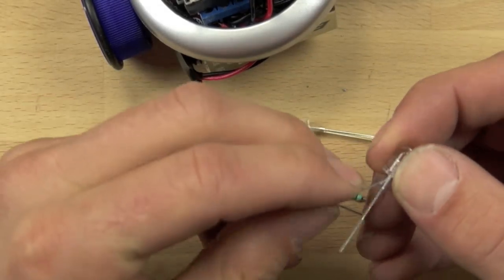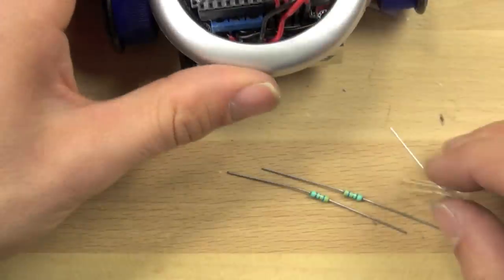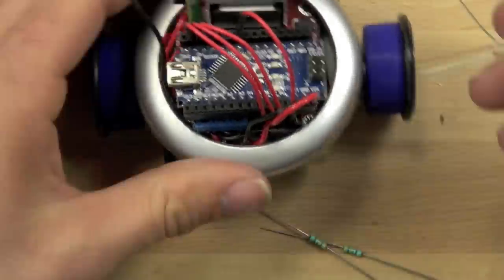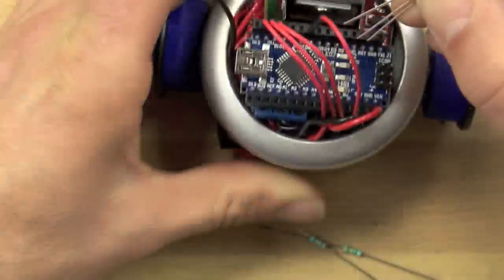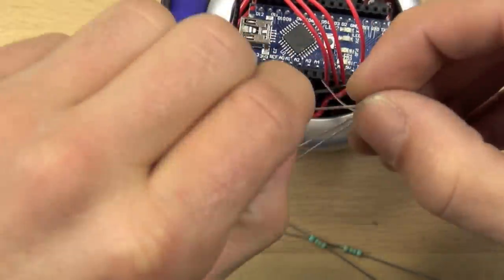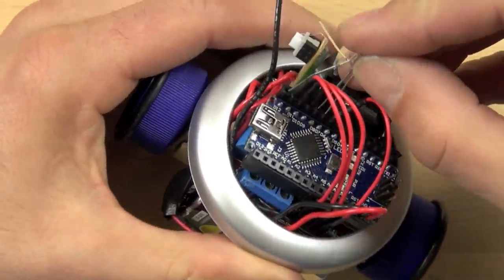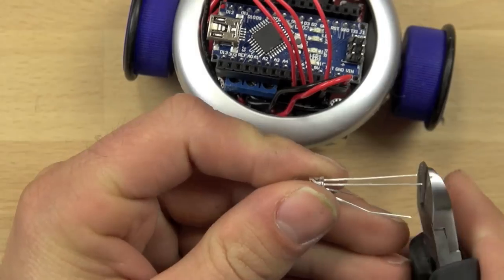Now on the first one that we're going to put up, we're going to bend the longer lead back in such a way that one of the legs is going to connect to pin 12. And so we want to sort of bend those legs out so that we can connect to pin 12.